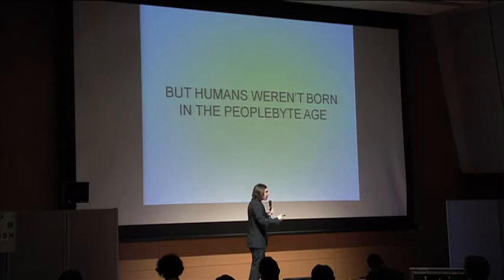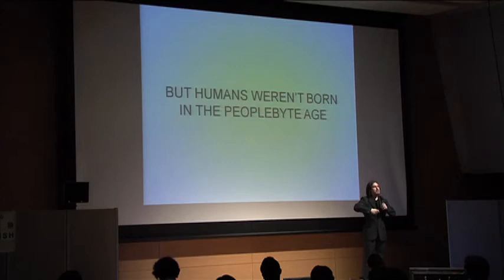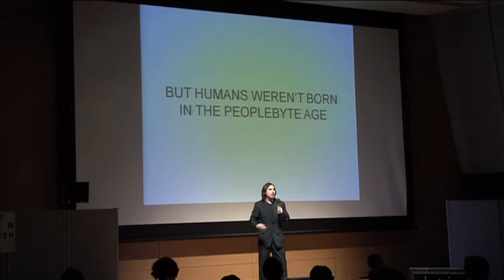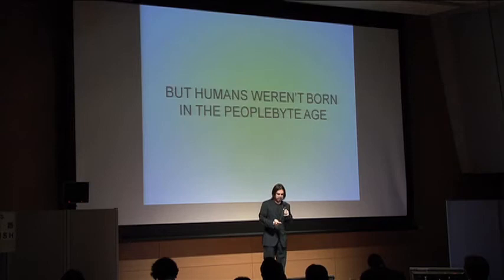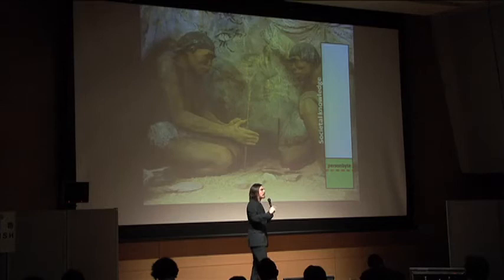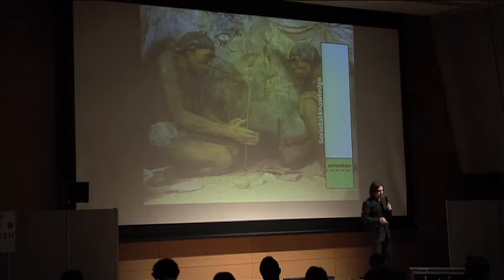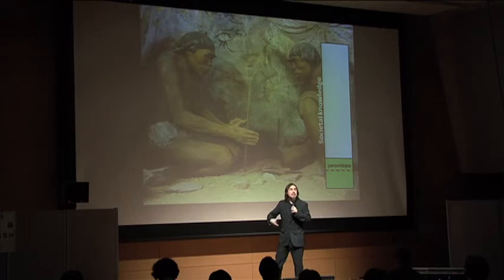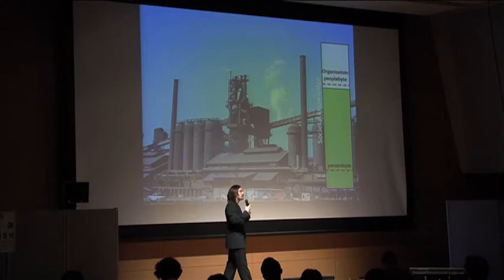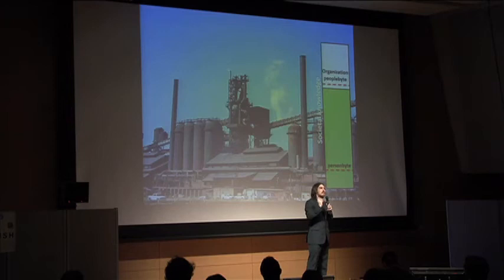We weren't born into this age of large volumes of knowledge where we need to create large networks of people and organizations to put our inventions into practice. Many years ago, our great-great-great-grandancestors had a total amount of knowledge very similar to what each one of them could hold. But knowledge is very leaky. As people discover things, other people imitate or learn from them, and it starts growing. At some point, you start hitting a natural limit — not that of the individual, not the person bite, but the amount of knowledge you can embed in an organization.